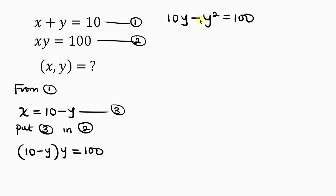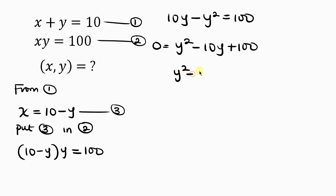When negative y squared crosses to the right it becomes y squared; when 10y crosses to the right it becomes minus 10y; and we already have 100, so that's plus 100. Moving everything to the right gives us 0 on the left, which is the same as y squared minus 10y plus 100 equals 0. Now we have a quadratic equation.